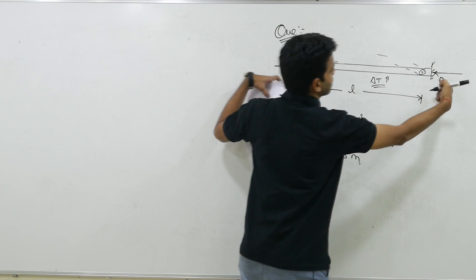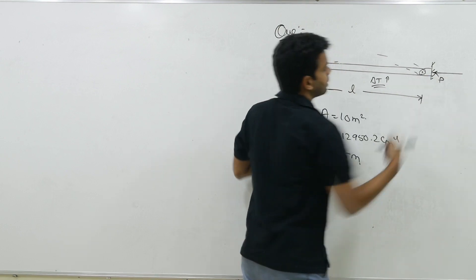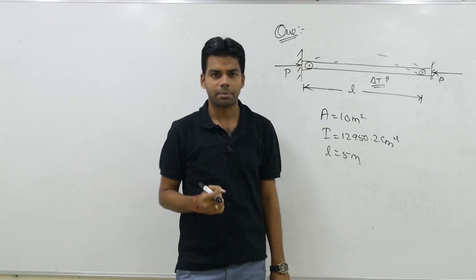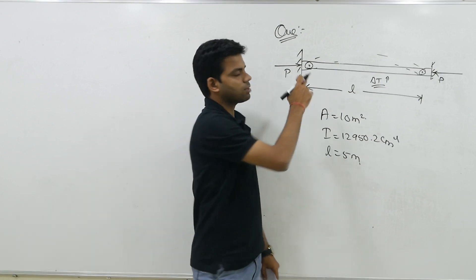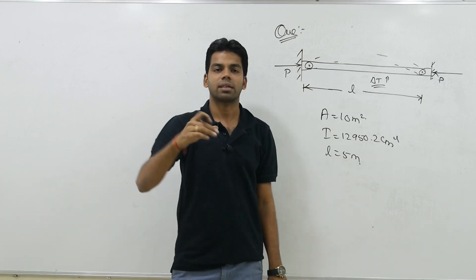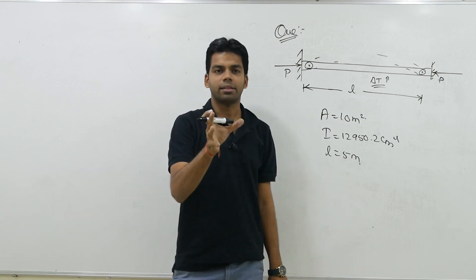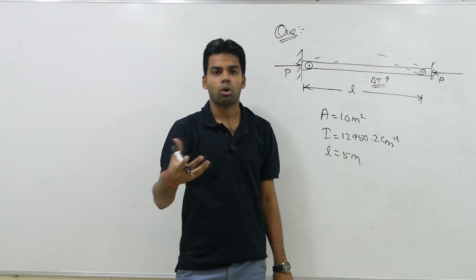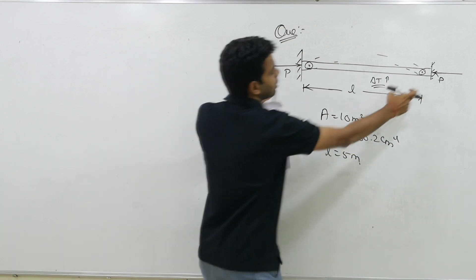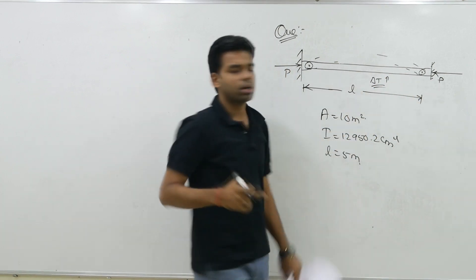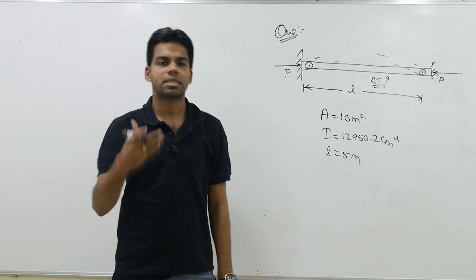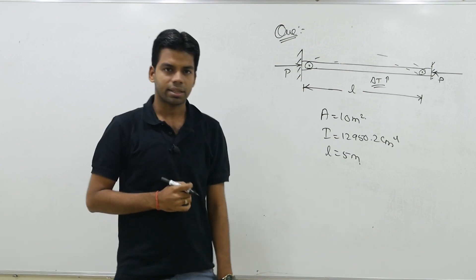And because of this when this compressive force P, when this load P becomes greater than the buckling load - ye theory of columns mein aapne padha hoga - jab ye force, compressive force hum laga rahe hain, when this force becomes greater than the buckling load, then the slender rod or the column buckles. Tab ye P buckling load ke equal hoga, then this particular bar will start buckling.